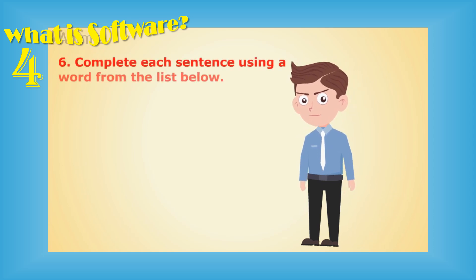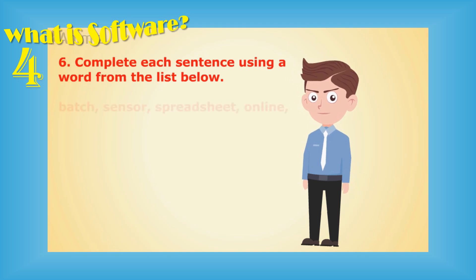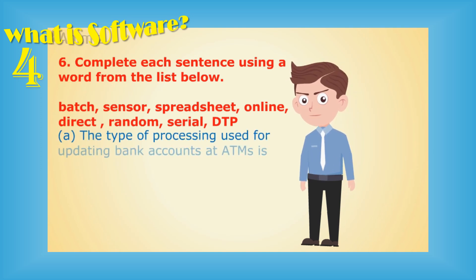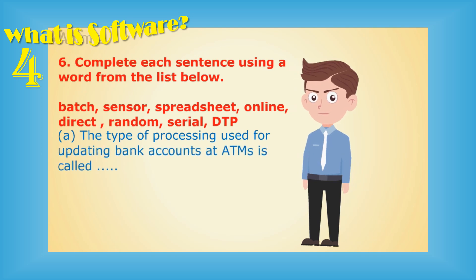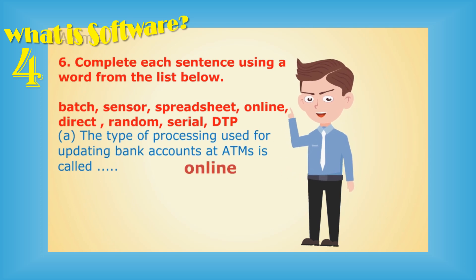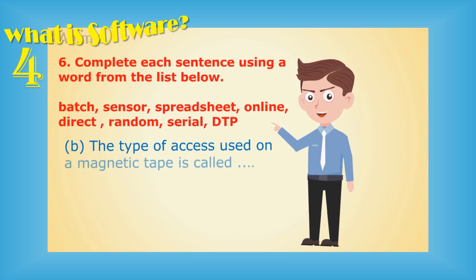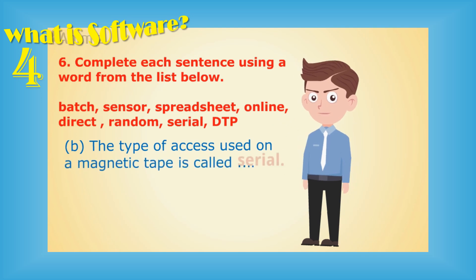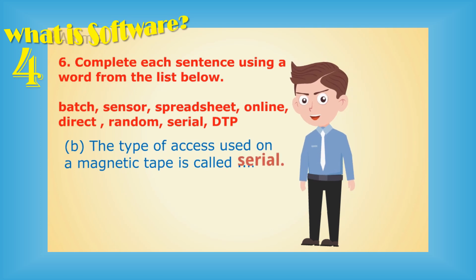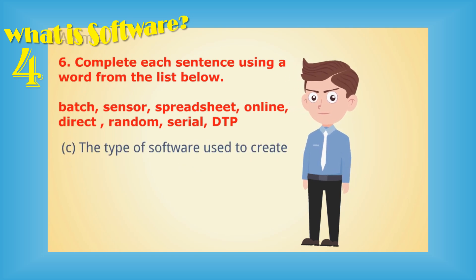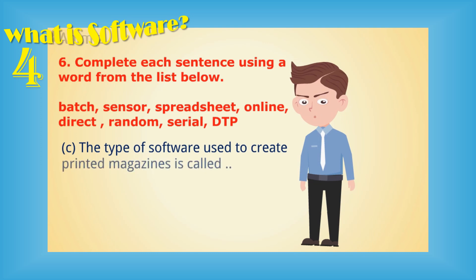Question number six: complete each sentence using a word from the list: batch, sensor, spreadsheet, online, direct, random, serial, DTP. A) The type of processing used for updating bank accounts at ATMs is called — answer: online. B) The type of access used on a magnetic tape is called — answer: serial. C) The type of software used to create printed magazines is called — answer: DTP.